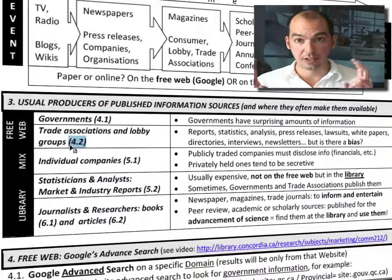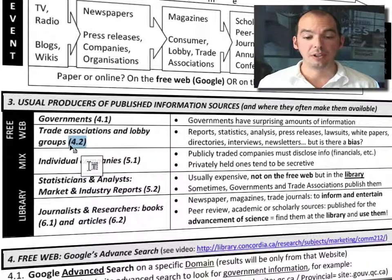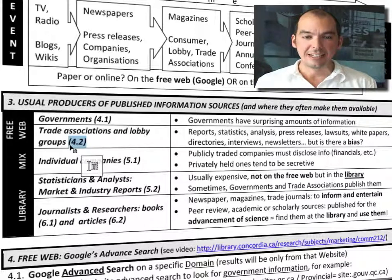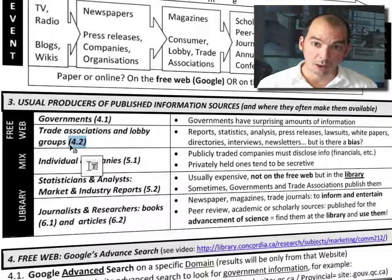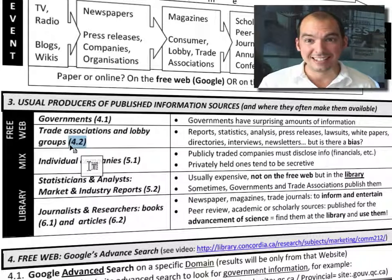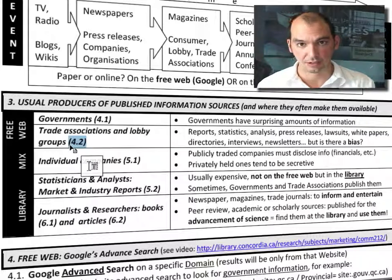Another usual suspect that produces information is trade associations and lobby groups. There are a lot of them out there, but they're not very well used by business students, which is unfortunate because there are really interesting reports issued by trade associations. Sometimes individual companies want to discuss an issue through press releases or annual reports, but other times they prefer to act through a trade association. So it makes sense to seek out whether there's a trade association for the industry you're interested in. That's covered at section 4.2 of the handout.